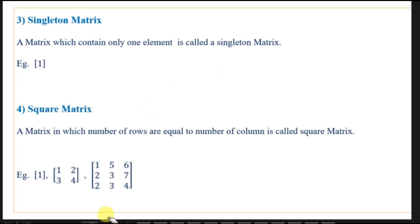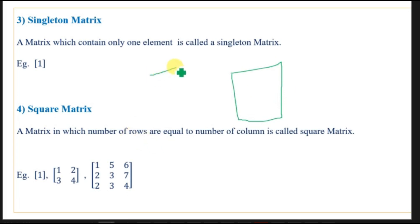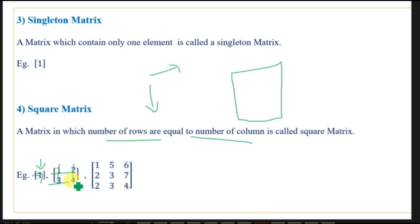The next definition is a square matrix. When we think about a square, we know that all sides are equal. Similarly, if the number of rows and the number of columns in a matrix are equal, then the matrix is said to be a square matrix. For example, a matrix with one row and one column is a 1×1 square matrix; with two rows and two columns it is a 2×2 matrix; and with three rows and three columns it is a 3×3 square matrix.